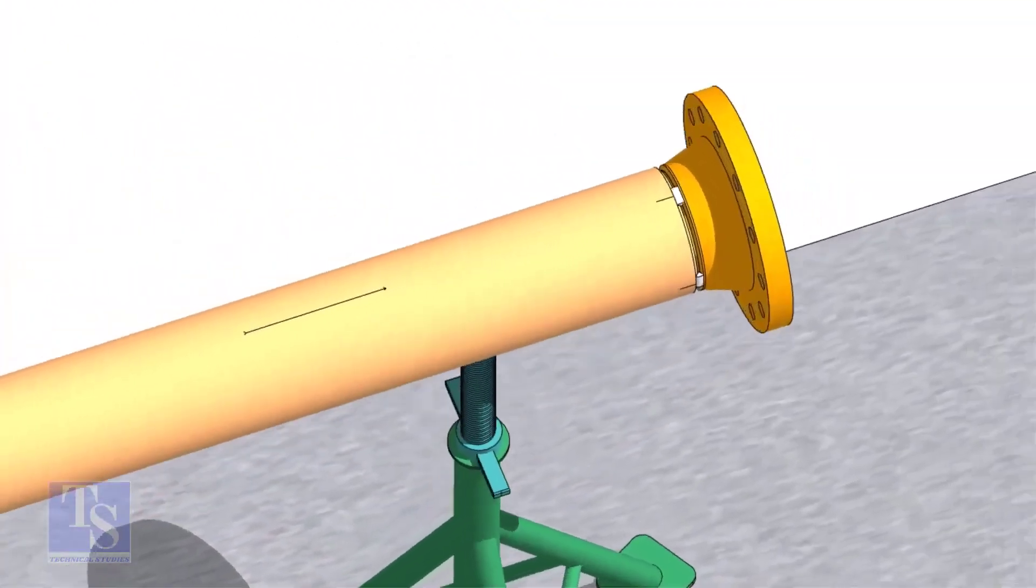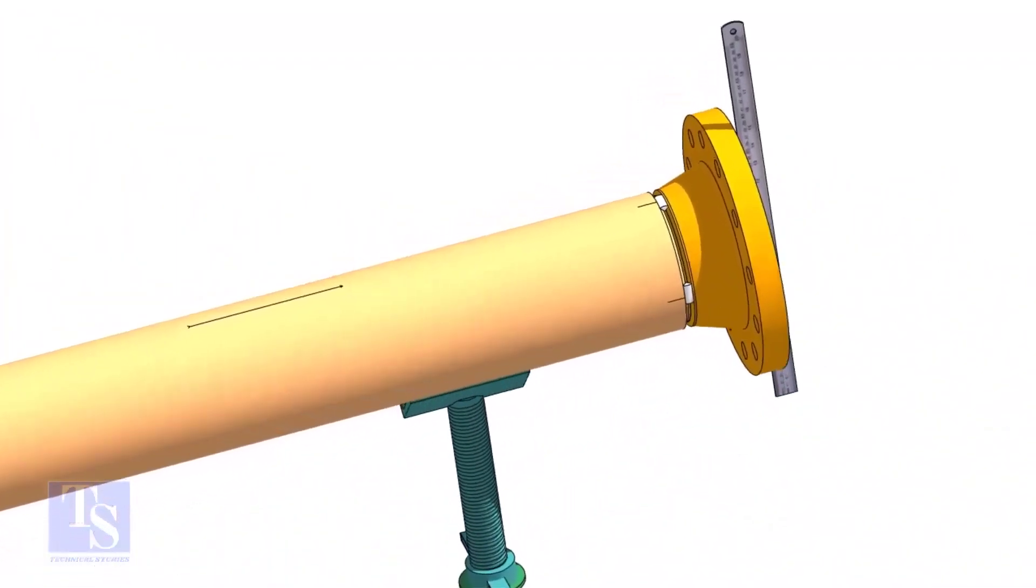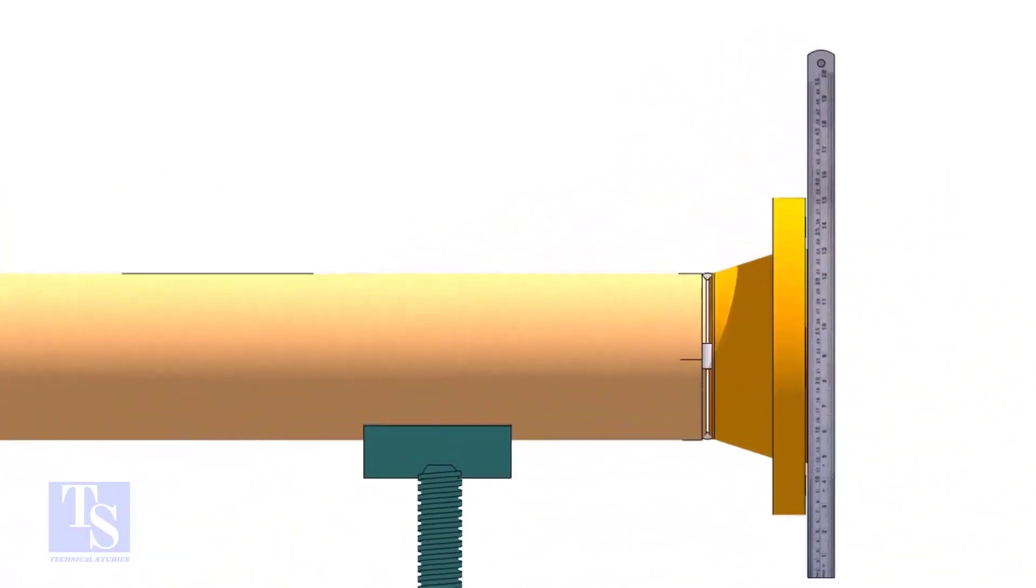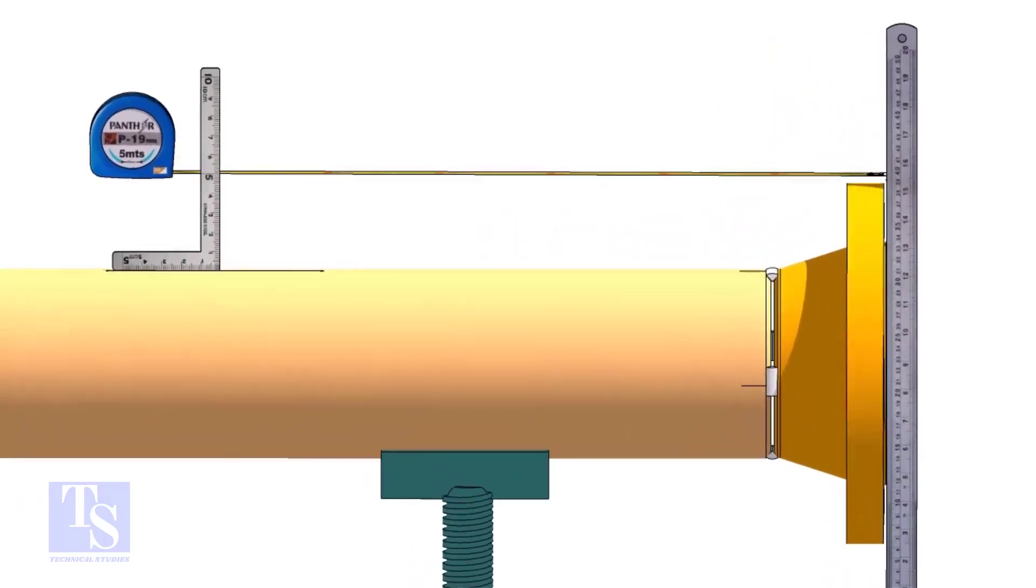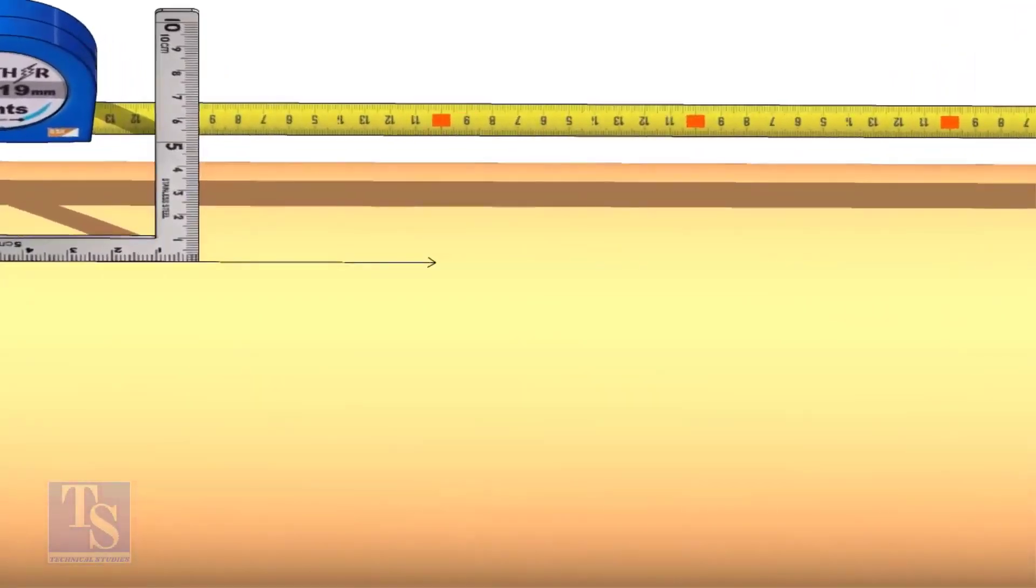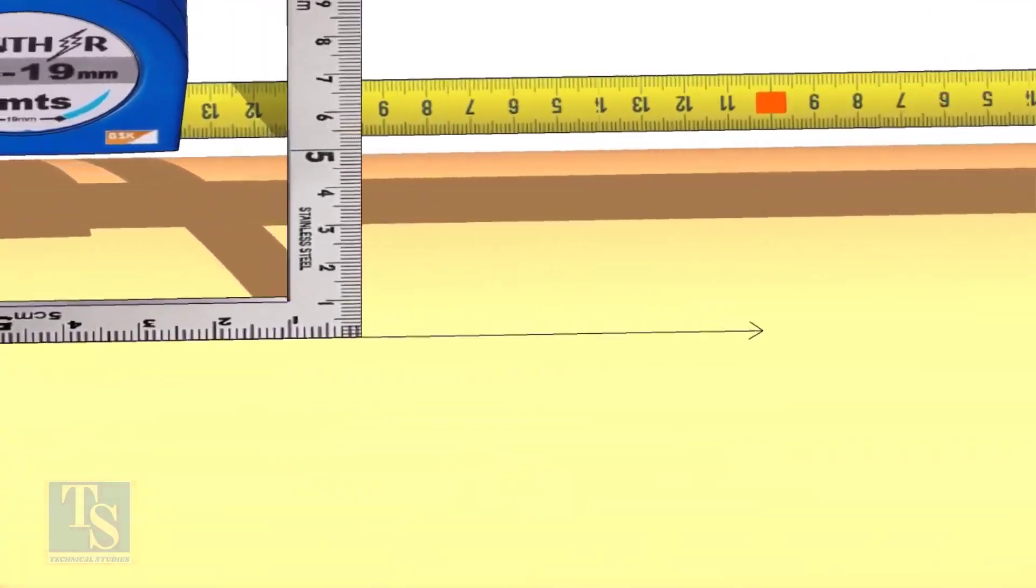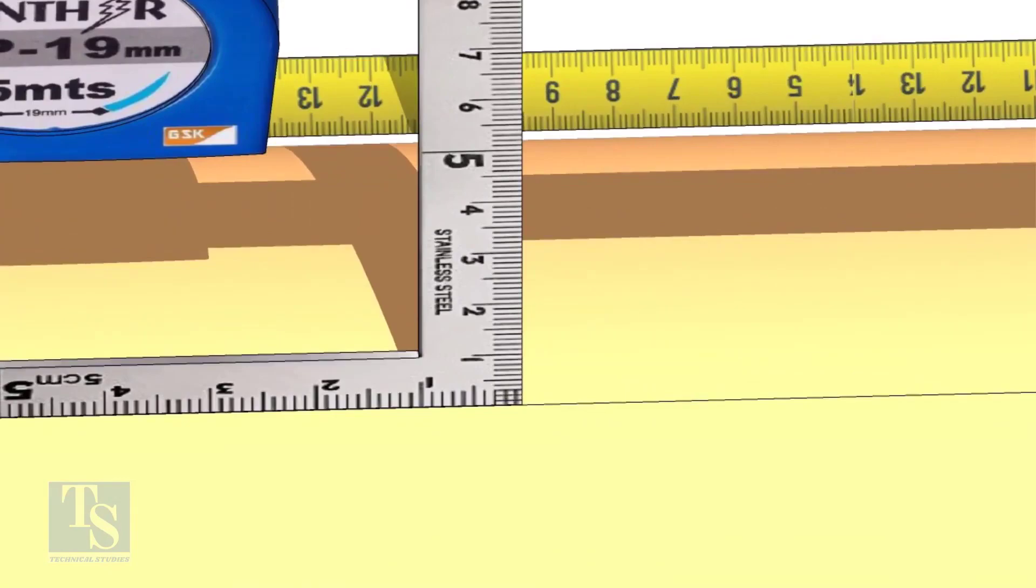Hold a steel ruler on the face of the flange vertically. Put a right angle on the pipe where the line is drawn. Move the right angle until the edge comes on 595mm on the tape. Mark on the pipe where the right angle edge touches.